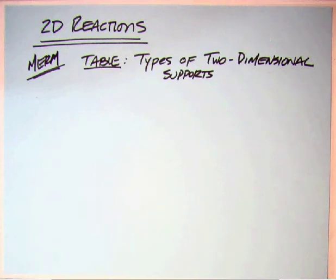In the MERM, there's a table titled Types of Two-Dimensional Supports, and that's the table that we're going to go through, except I'm going to do them in more of the order in which I like to present them.